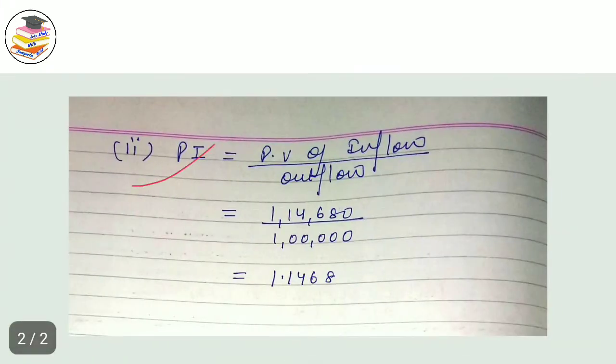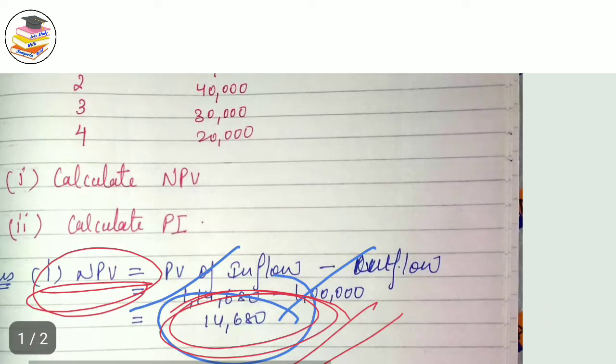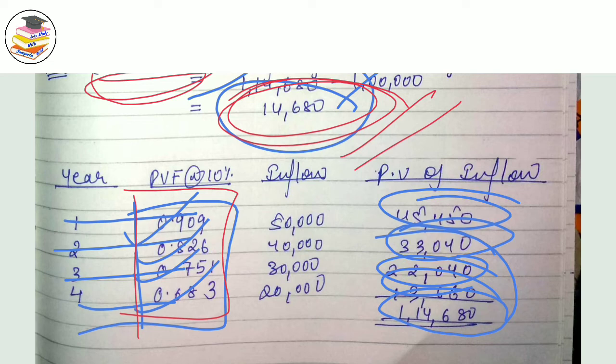Profitability index. Profitability index is PV of inflow divided by PV of outflow. Now you have to watch this calculation video. I hope you will see it and subscribe to my channel and share it with your friends. This is a small calculation but the most important calculation of this chapter. Please take your calculation.